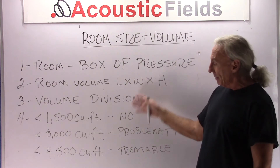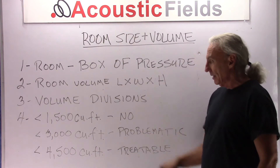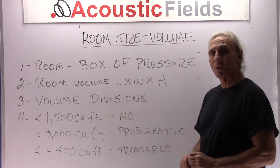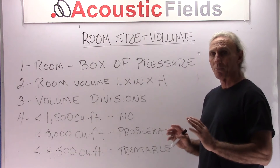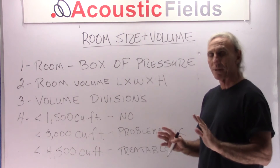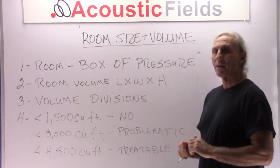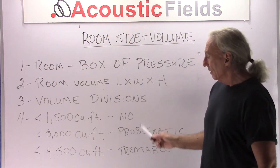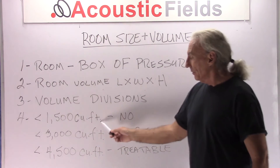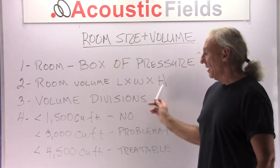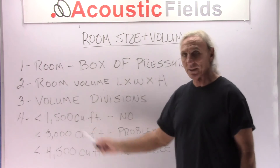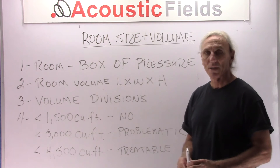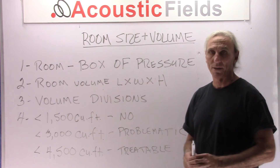I went through our database and came up with three divisions. We have 116 rooms built and measured in our database and I broke them down into three areas — all based on volume. So if your room length, width, and height is less than 1500 cubic feet, please find another room.